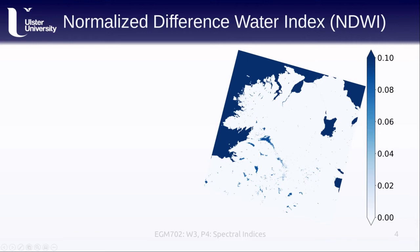Another example of a normalized difference index is the Normalized Difference Water Index. There are actually two different normalized difference indices for water. I'm going to talk about the one for liquid water first. For water, the reflectance in the visible green is usually much greater than the reflectance in the near infrared.